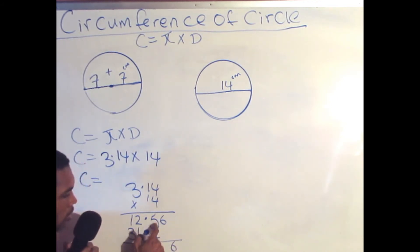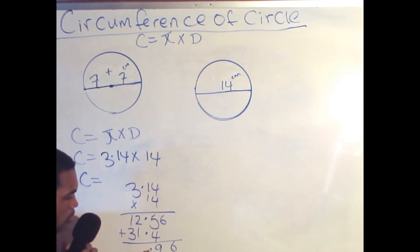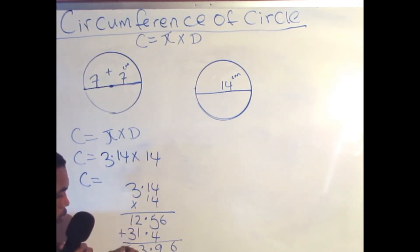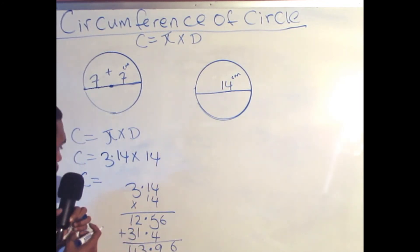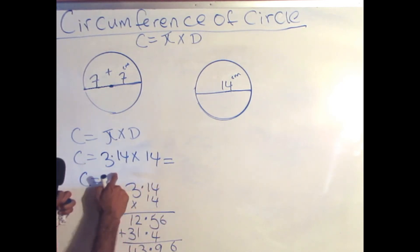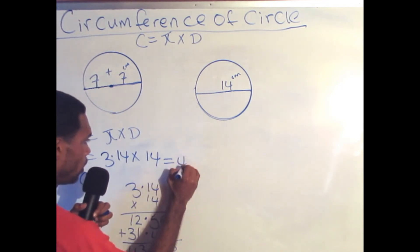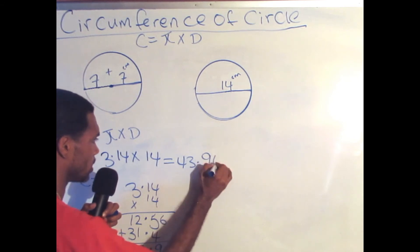Adding the results: 6, then 5 plus 4 is 9, respect the decimal, 2 plus 1 is 3, and 3 plus 1 is 4. So my circumference of this circle is equal to 43.96.